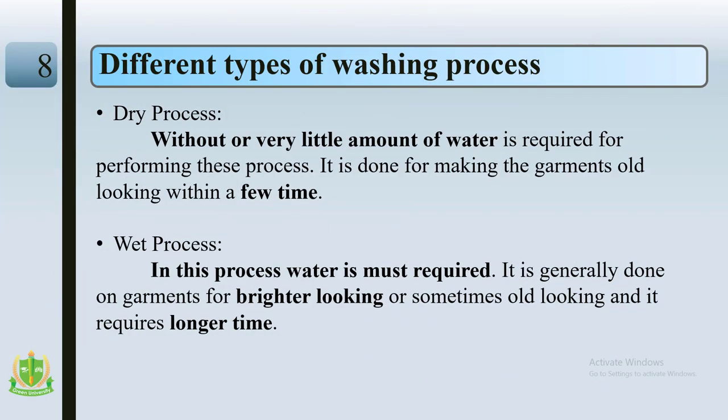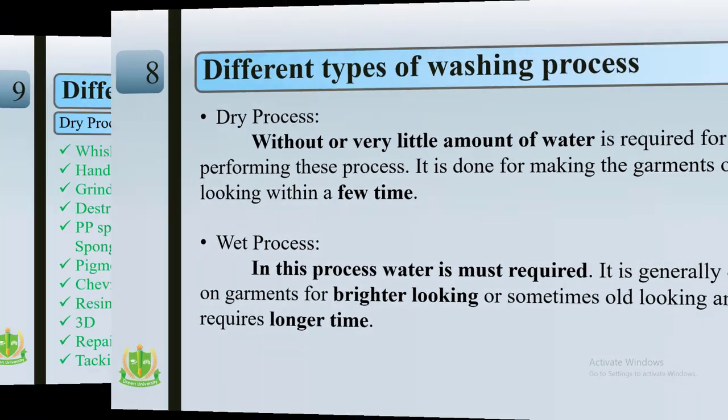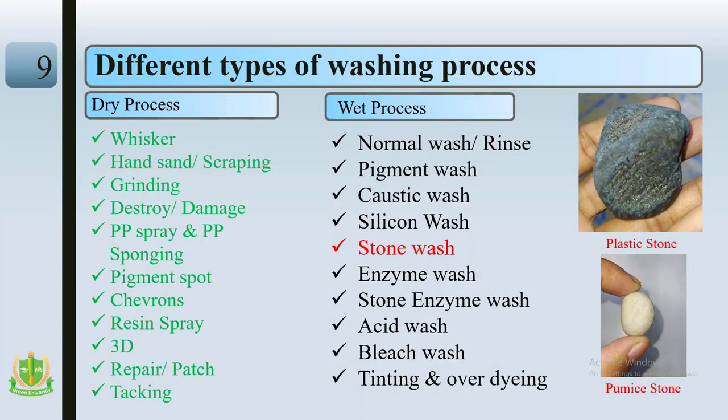There are two types of washing process: dry process and wet process. The core difference is that dry process uses without or very little amount of water, while wet process requires a large amount of water. Dry process requires less time, whereas wet process requires longer washing time.